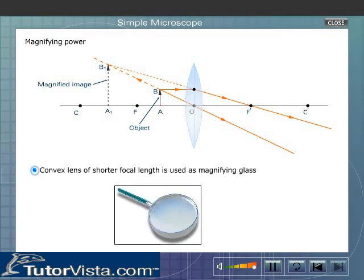Therefore, a convex lens of shorter focal length is used as magnifying glass. That is, shorter the focal length, larger the magnifying power.